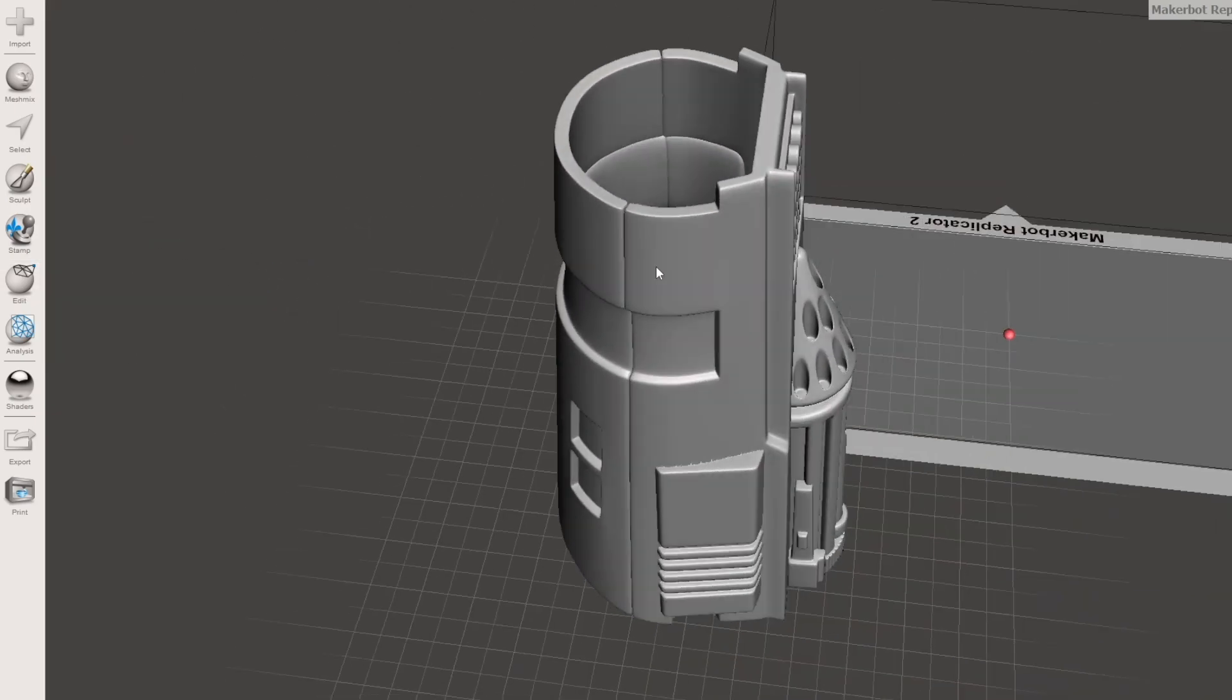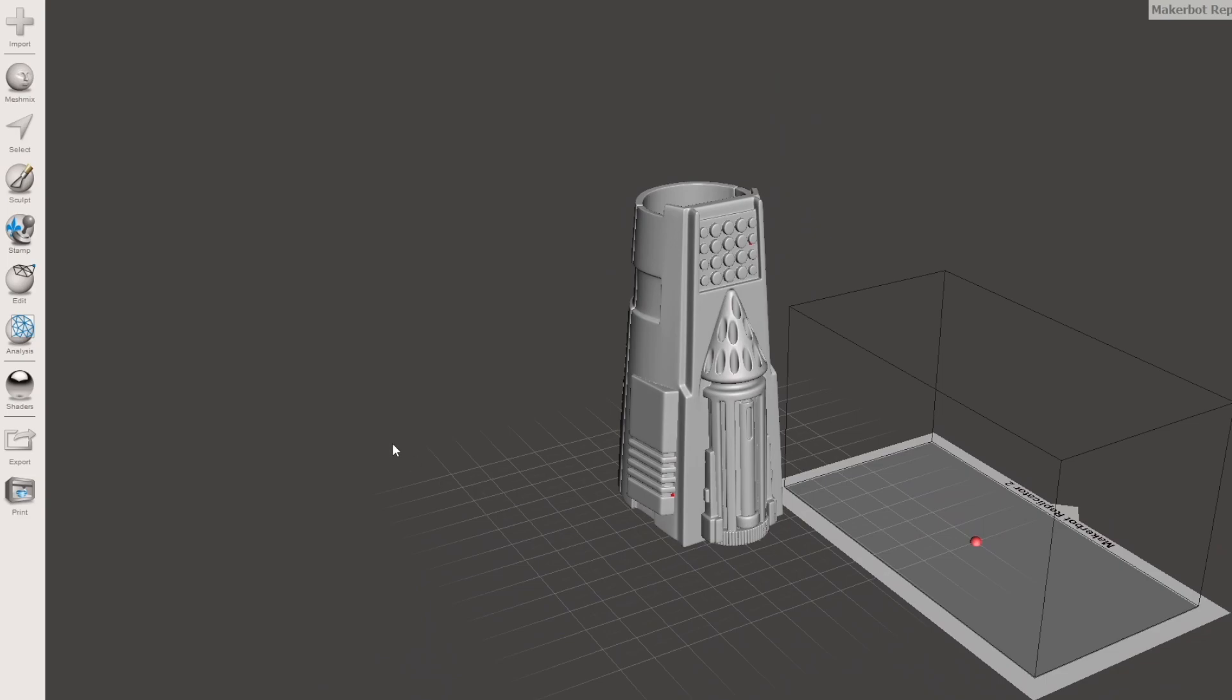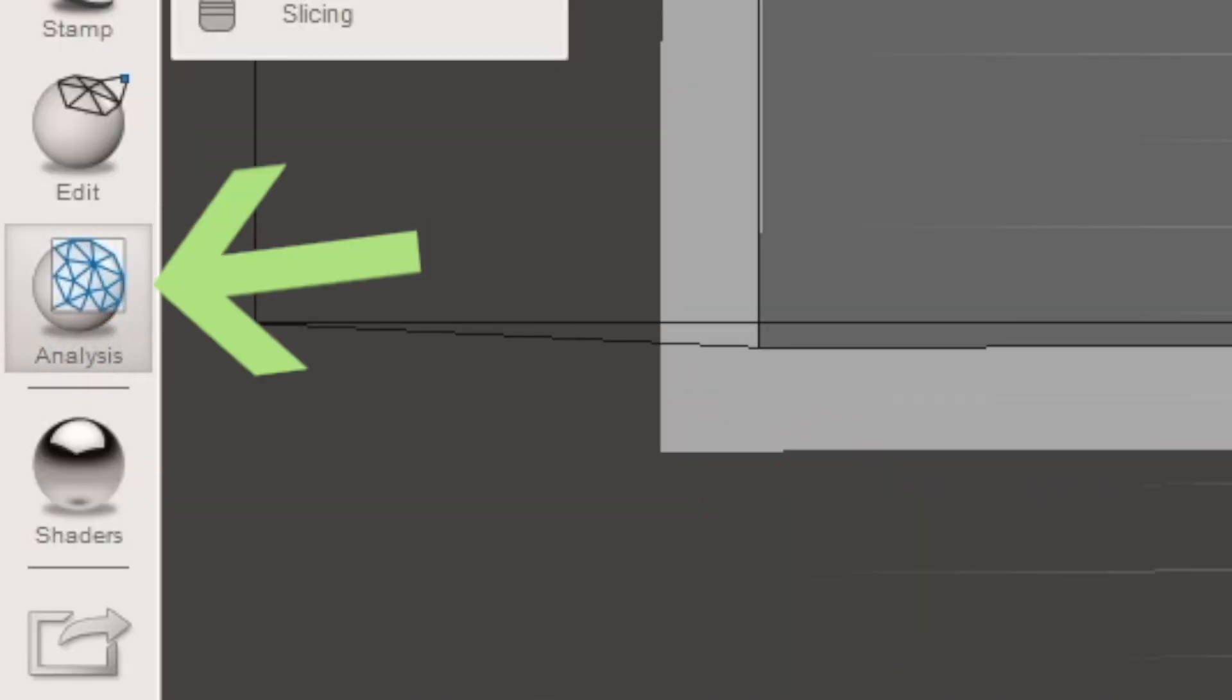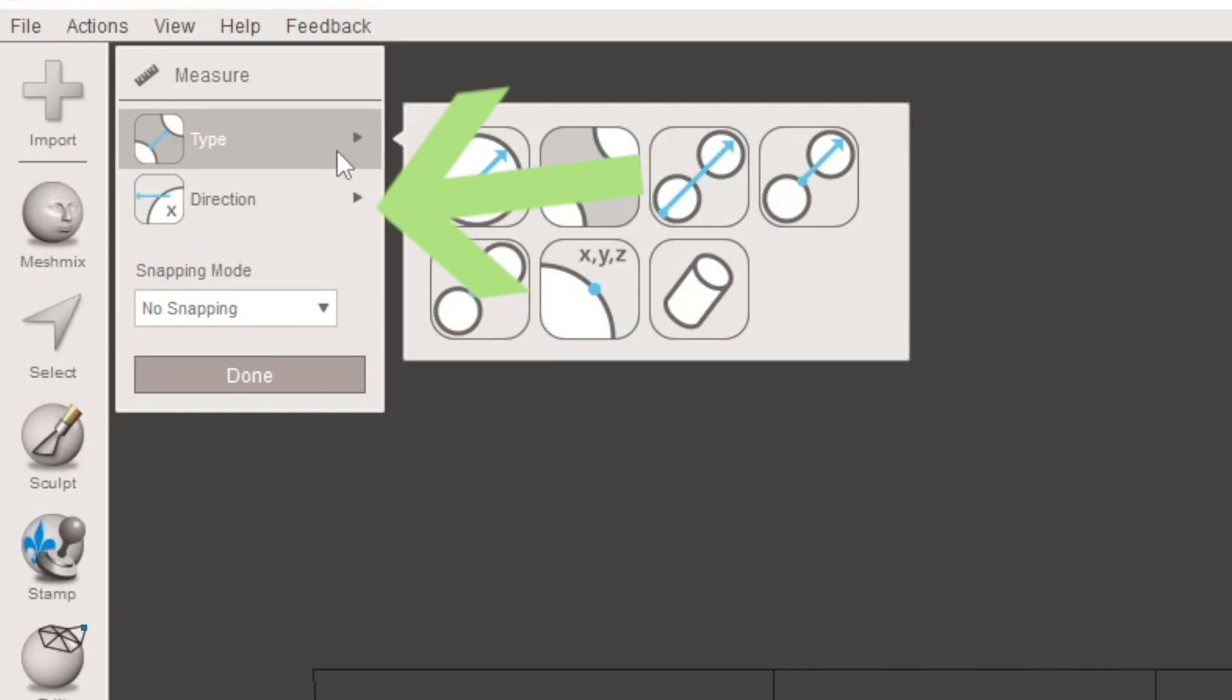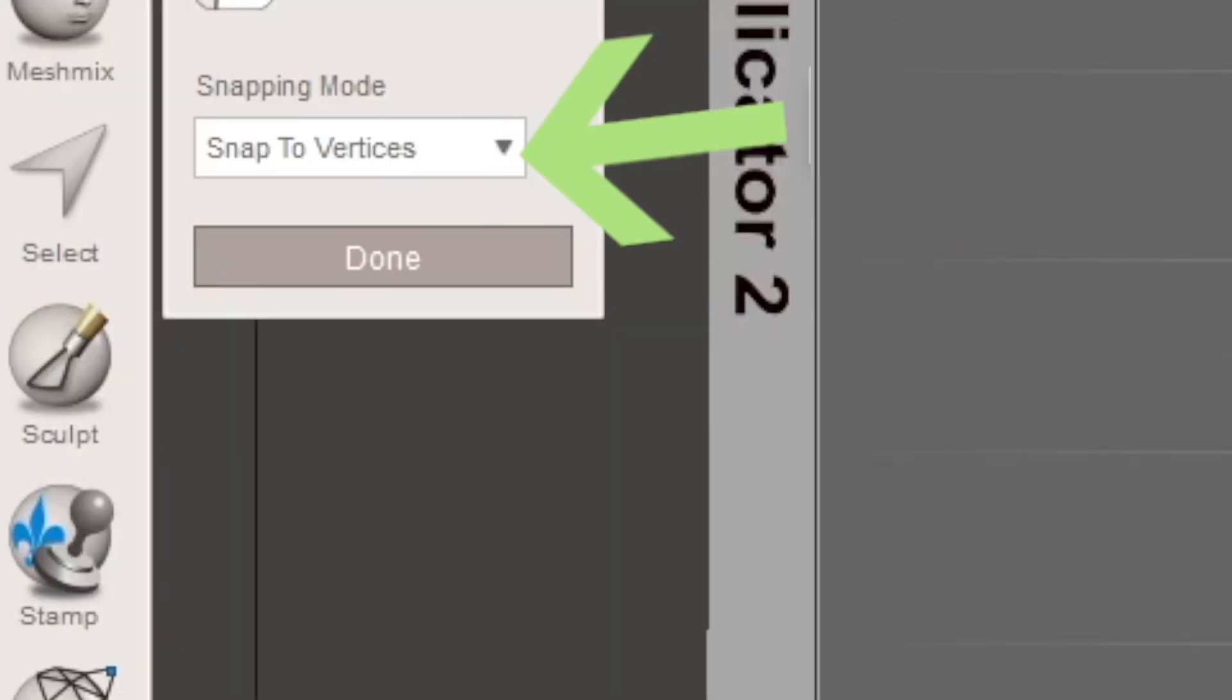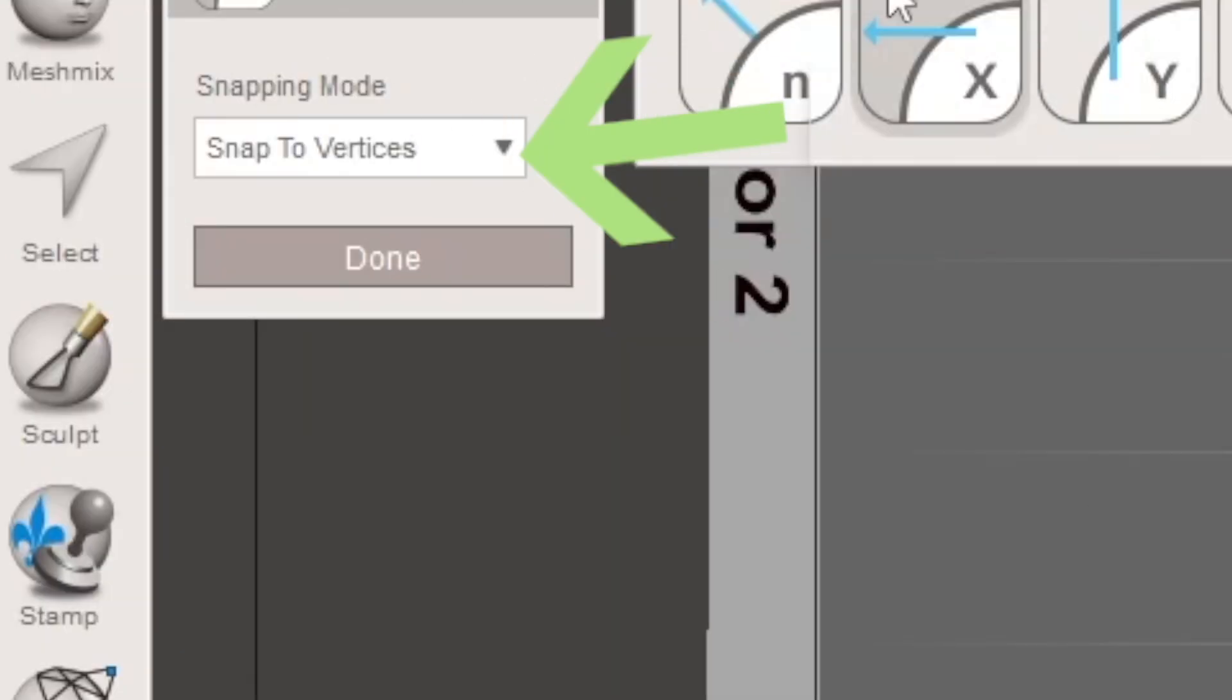So what I'm doing here is I'm measuring the file as is at 100% scale. I first click on the analysis button on the left hand side and click on the measure option. From here I select the x-axis and for the type I'm selecting this option with the line going through these two circles. And to finish out I select snap the vertices under the snapping drop-down menu.